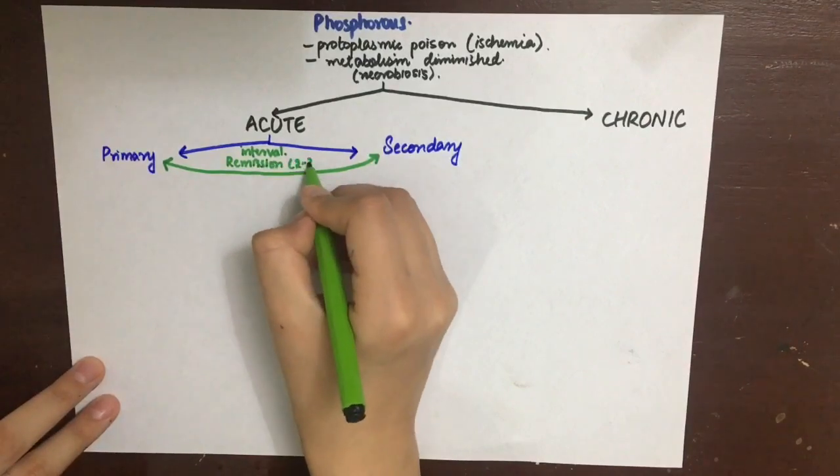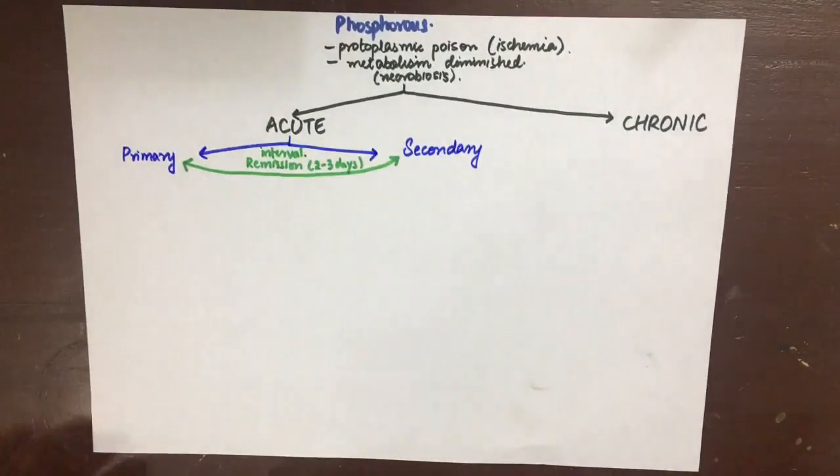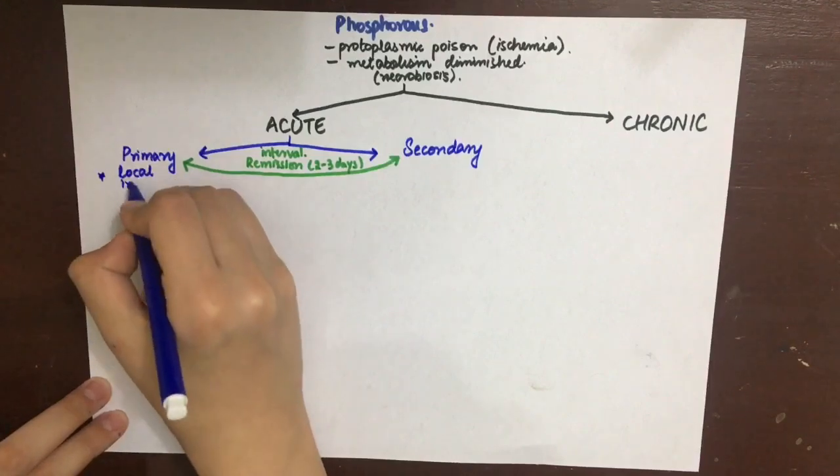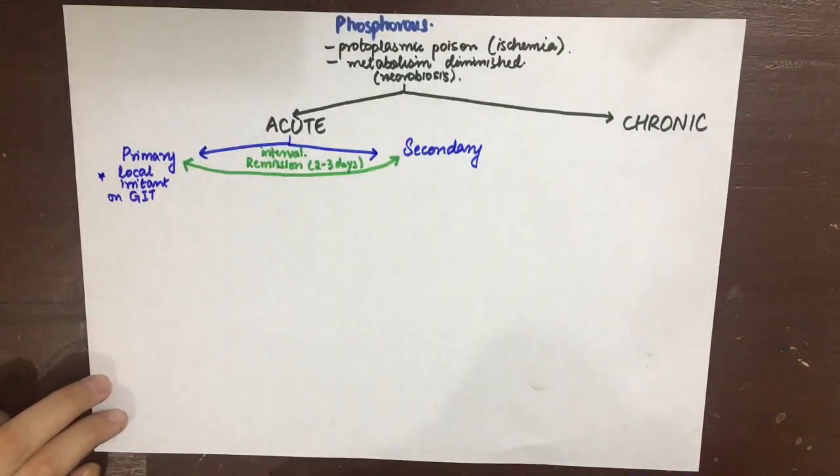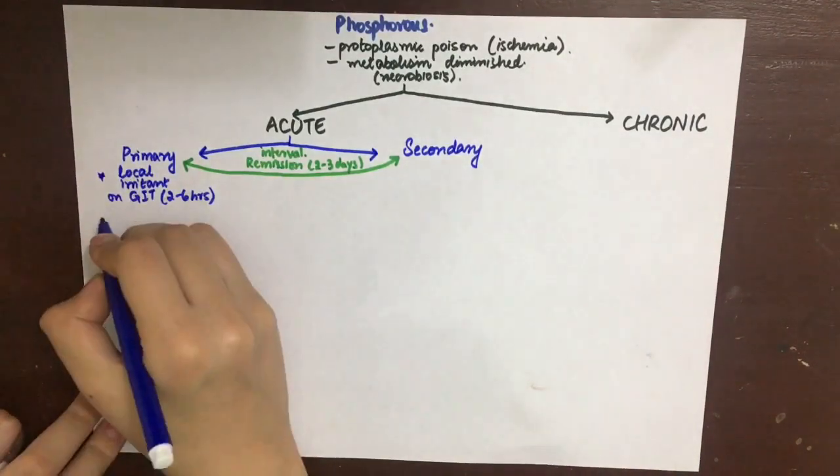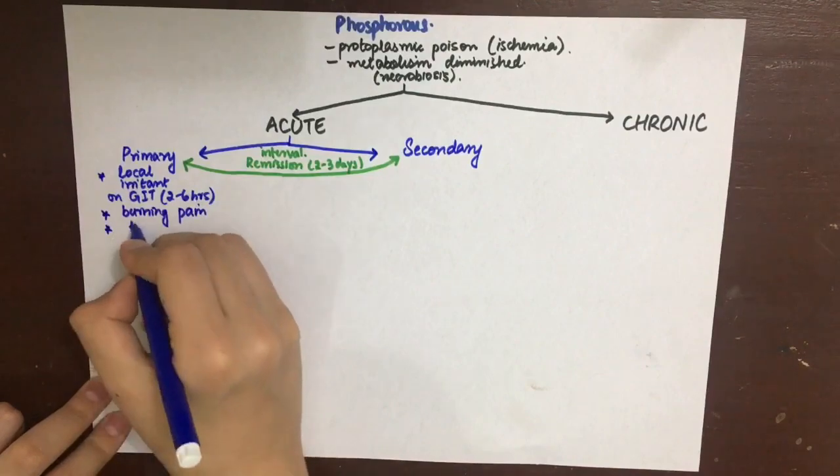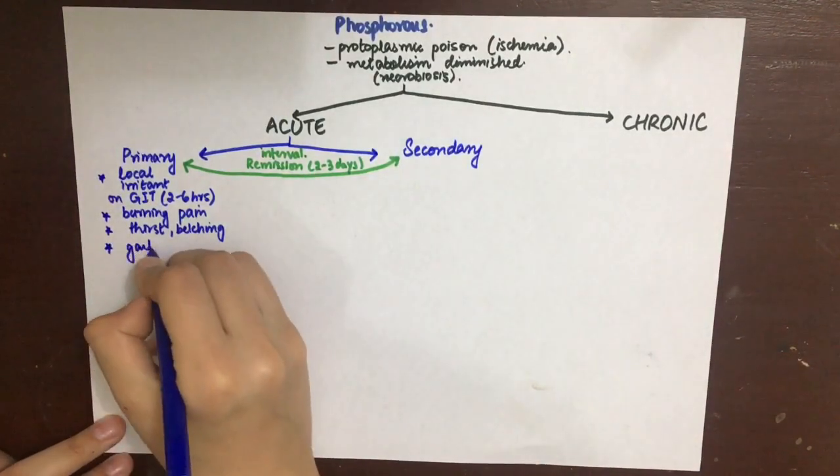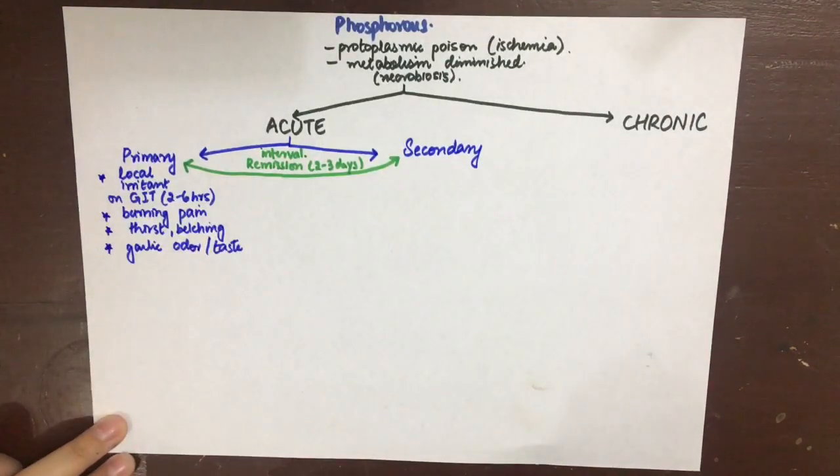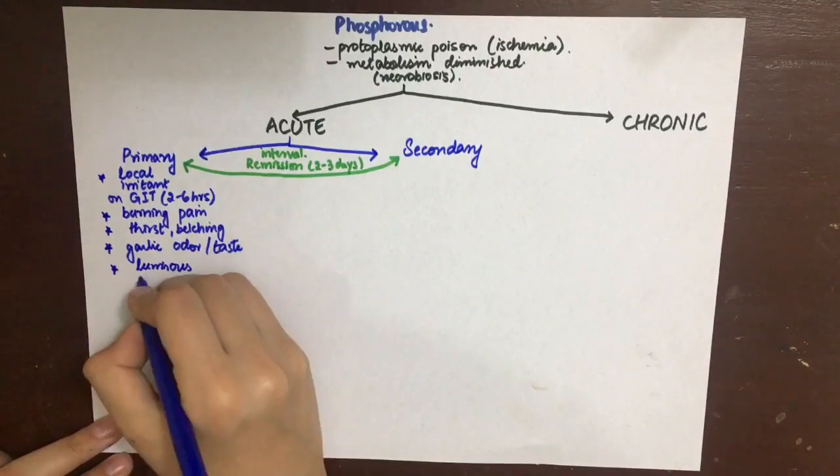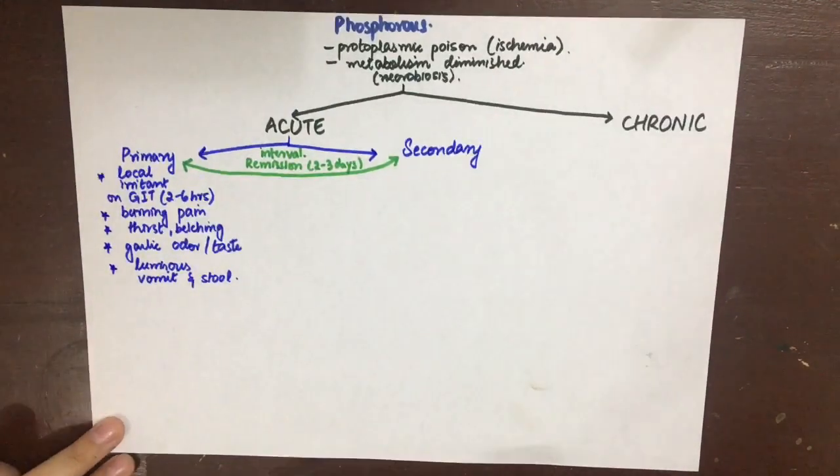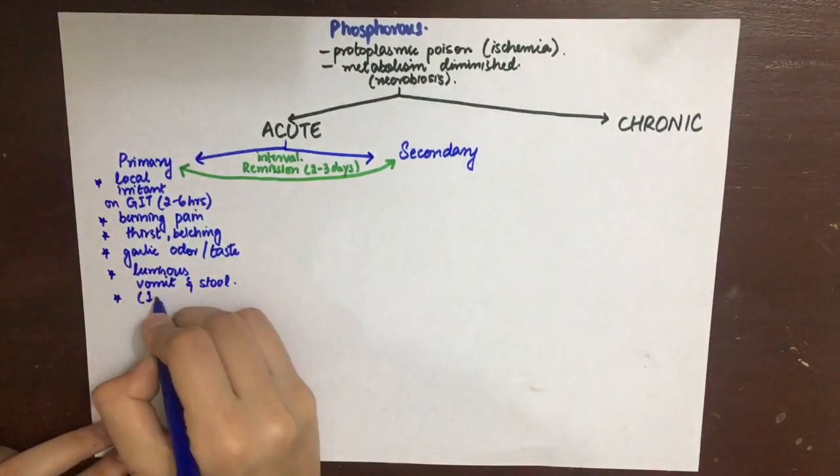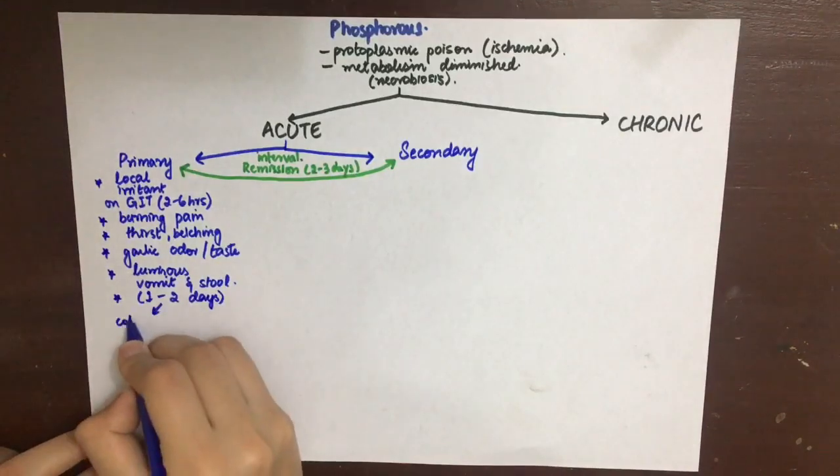The primary phase of acute phosphorus poisoning resembles the local irritant action on the GIT. It occurs in about two to six hours. There is burning pain in the stomach, esophagus, and throat, intense thirst, frequent gaseous belching, nausea, vomiting, and diarrhea. A garlic-like taste and odor is perceived in the feces too. The luminous vomit stained with blood is diagnostic of phosphorus poisoning.